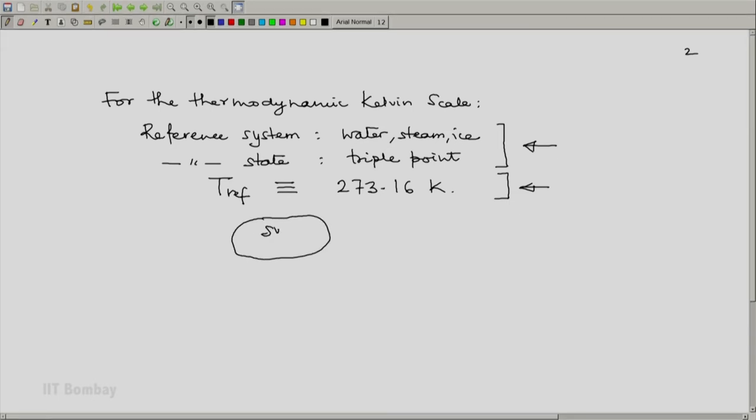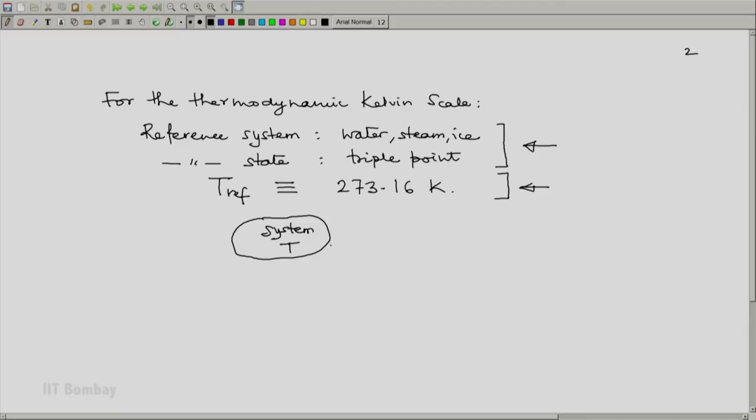Suppose we have a system whose temperature T is to be measured. What we do is if the system is large enough and can be approximated to a thermal energy reservoir then we use the system itself or at the same temperature T we create a thermal reservoir. Then we create a thermal reservoir which is at T ref, that means it contains water at its triple point. And then we run a reversible machine.